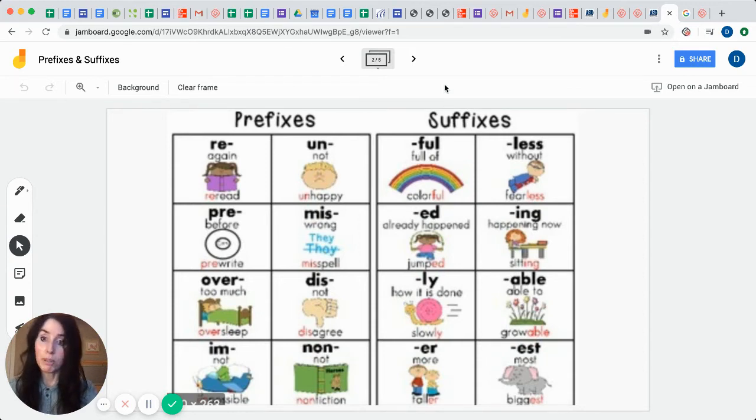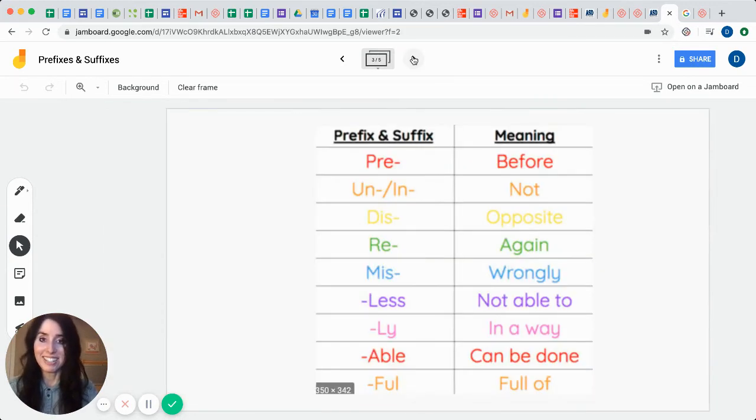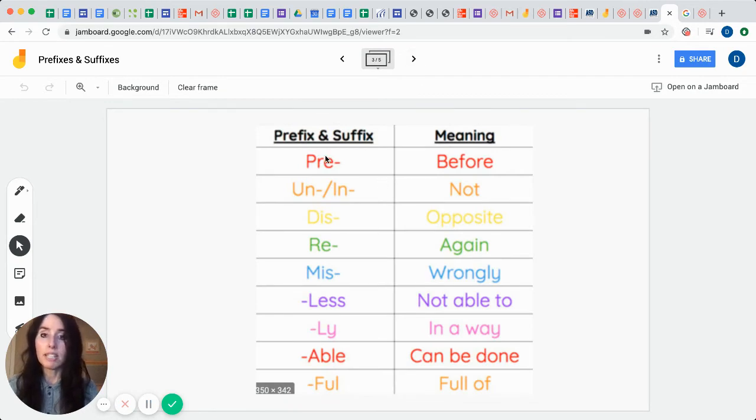Hopefully this has helped you remember what we've learned this year. Okay, so again, let's do a quick quiz. So pre means what? Before. What does un and in mean? Not. Nice. What does dis mean? Opposite. What does re mean? Again. What does miss mean? Wrongly. What does less mean? Not able to. Lee means what? In a way, or how it's done. Able means what? How it can be done. Full means what? It's full of something. So anyways, this is my lesson for today on prefixes and suffixes. And I hope you enjoyed that.